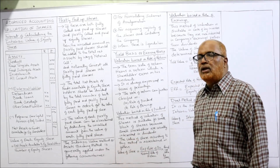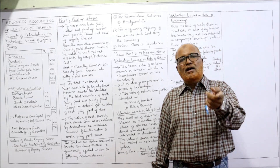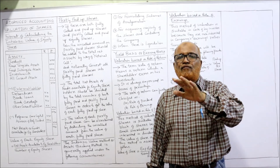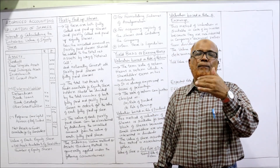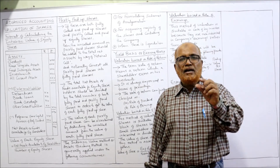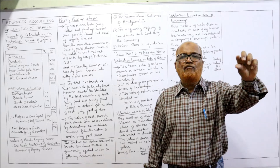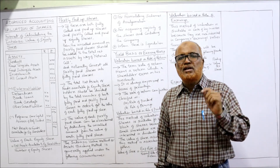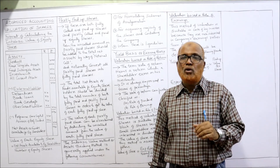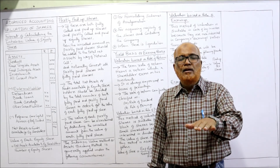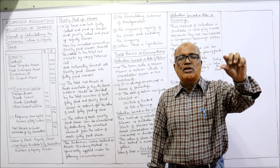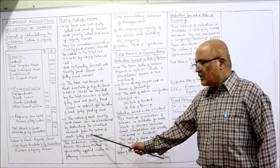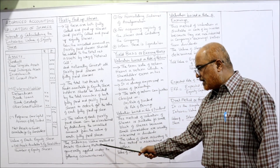The value of each partly paid-up share can be ascertained by deducting the uncalled amount from the value of each fully paid-up share. First convert partly paid-up shares into fully paid-up, then find out the value — that will be the value of the fully paid-up share. Then to find the value of the partly paid-up share, deduct the uncalled amount. For example, if the value of a fully paid share is ₹20, and ₹5 is still due and unpaid, then the value of the partly paid-up share is ₹15.